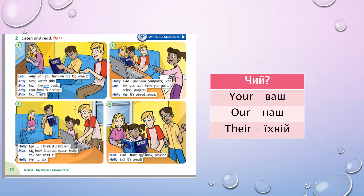'My book is about space. You can read it.' Чия книжка? My. And the last one: 'Can I have my book please?' — we underline 'my book'. So in the text we found: my book, my book, your computer, my book. That's all. Well done!